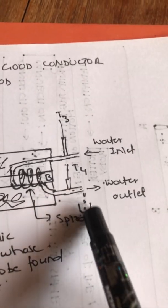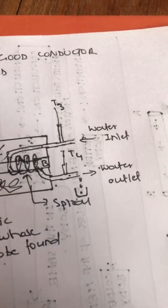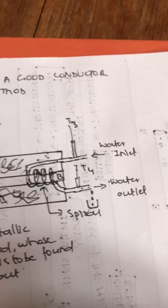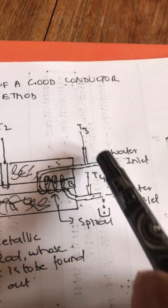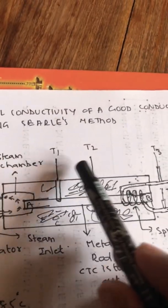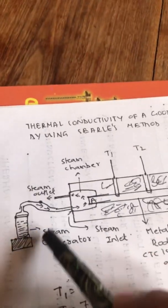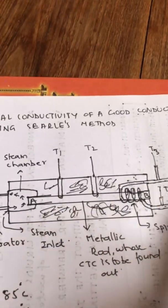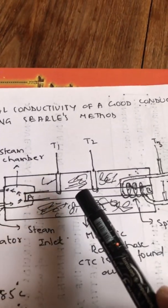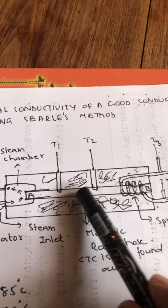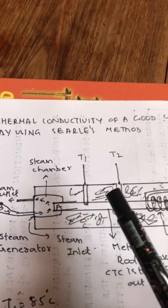At steady state, you collect the outgoing water for a certain period of time — say 30 seconds or one minute — and note down the temperatures T1, T2, T3, and T4. Then you can disconnect the setup. Be very careful during disconnection because it is extremely hot. After noting all four temperatures, take a vernier caliper and measure the diameter of the rod.